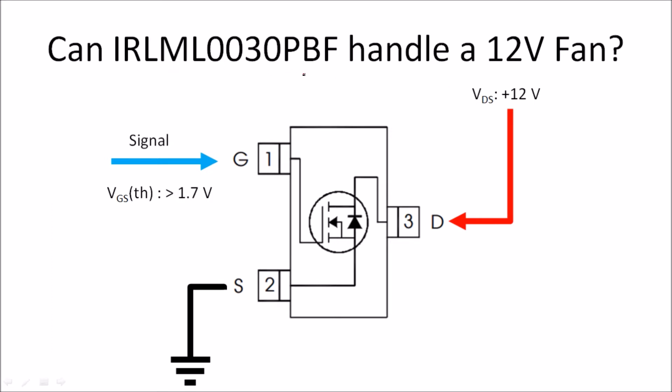Let's look at if this MOSFET IRL ML0030PBF can handle a 12 volt fan. So we connect the 12 volt supply to the drain and the source to the ground, and we apply 1.7 volt signal. The current usage of a typical fan from a computer case that you could use to turn on and turn off consumes somewhere around 300 milliamps or 0.3 amps. So the power that is dissipated is I squared times R, so we need to find out what this R is.